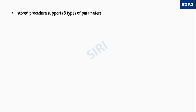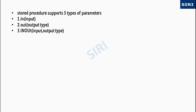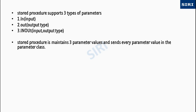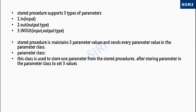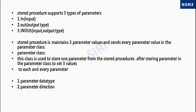The stored procedure supports three types of parameters: IN, OUT, and INOUT. The stored procedure maintains these three parameter values and sends every parameter value through the parameter class. The parameter class is used to store one value from the stored procedure. After storing parameters in the parameter class, we set three values for each parameter: parameter data types, parameter directions, and parameter values.